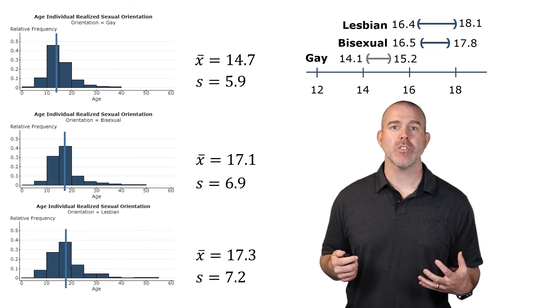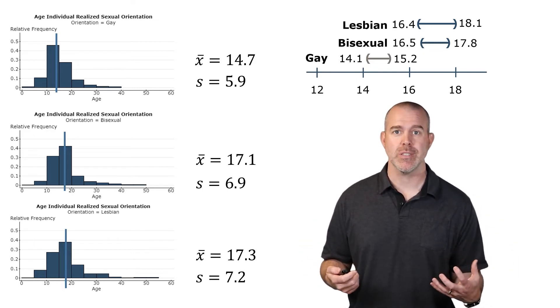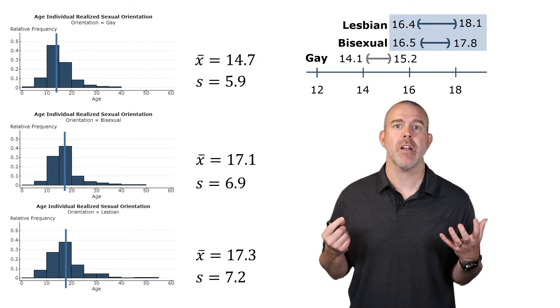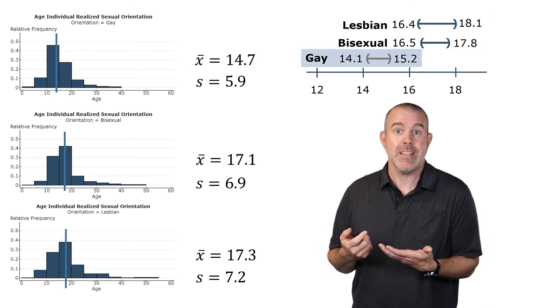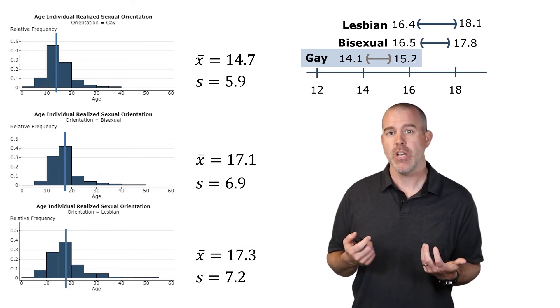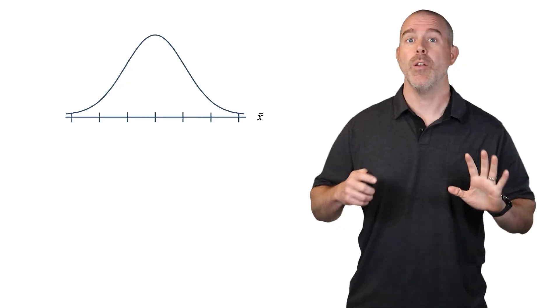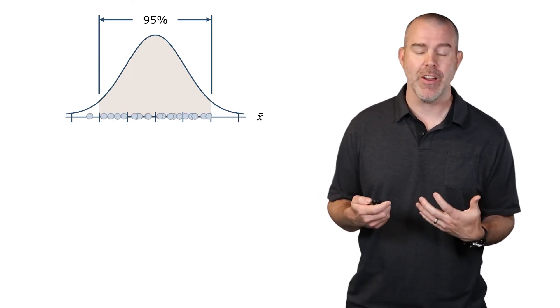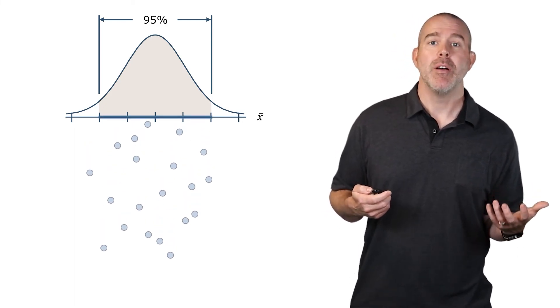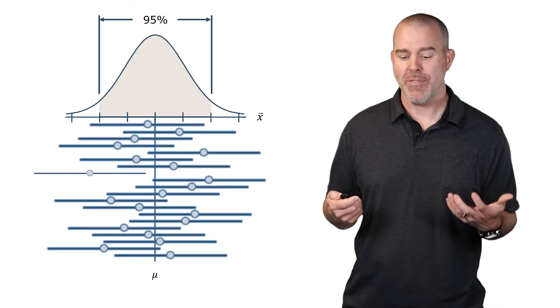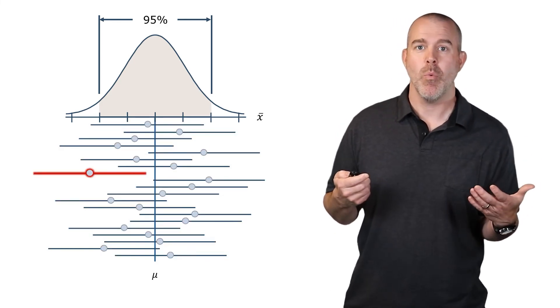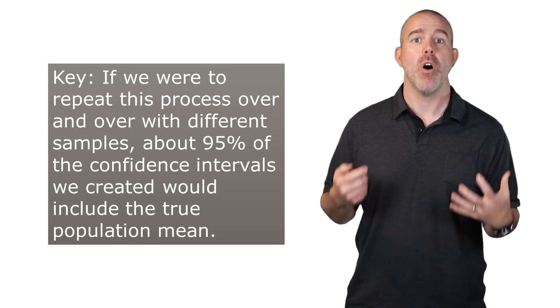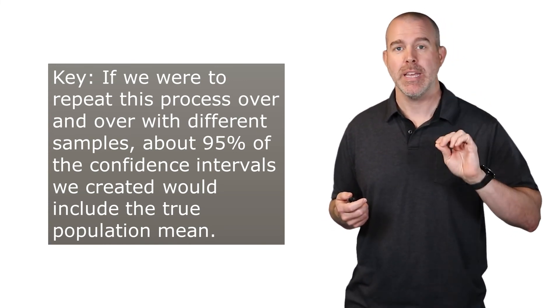Again, what confidence intervals allow us to do is make some inferences, draw some conclusions. In this case, we can see that lesbians and bisexuals tend to realize their sexual orientation at a pretty similar average age, whereas gay men or gay boys in this case, I guess would realize their age when they're still boys, much younger than lesbians and bisexuals. Now, again, we need to really emphasize the meaning here. Remember, we have this distribution of the sample means, 95% should be within here. So if I have 20 of them, 19 will be within there. One of them won't. If we draw confidence intervals, 19 of them will contain the true value and one of them won't. The key is it's 95%. If we repeat this process over and over and over, about 95% of all of the intervals that we create will contain the true population mean.